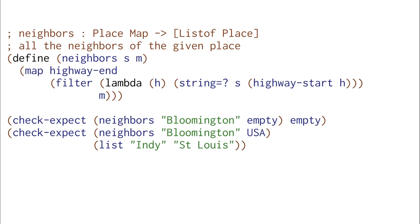Here's the neighbors function that you wrote last time. You can see that I wrote this function using map and filter. We simply collect all the highways where the start is equal to the place we're starting from, and then we simply take the end of each of those highways using map. By using map and filter here we can write this function a lot more easily than if we had to write it with a more complex recursive function following the template for maps and highways.